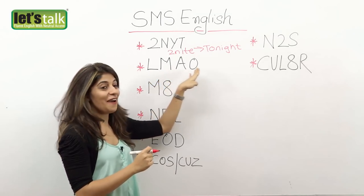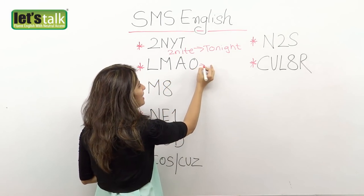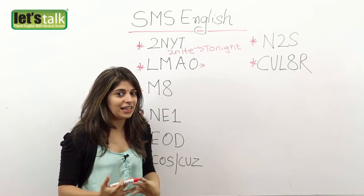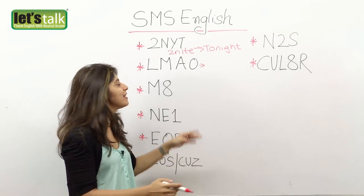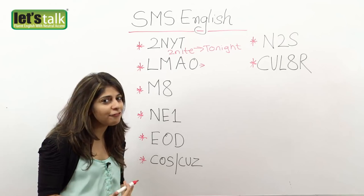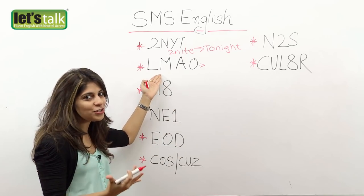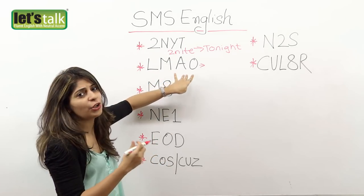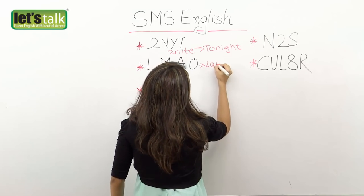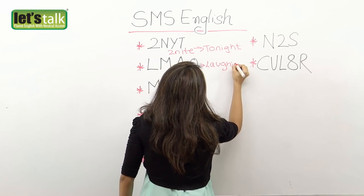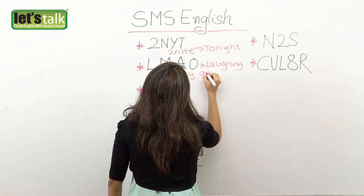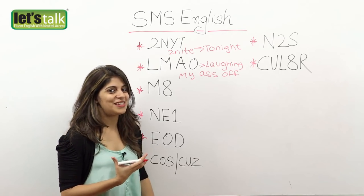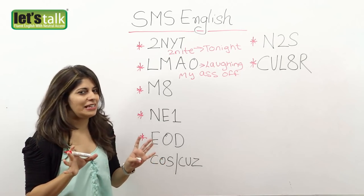Then we have LMAO — this is a real funny one. It means 'laughing my ass off.' This means you found something so funny and you are so amused — it's super hilarious and you just can't stop laughing. It's an expression that shows you just can't control your laughter. It's definitely used by many youngsters these days, but I would say please do avoid it.